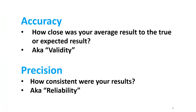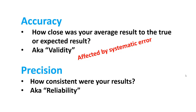To summarize: accuracy is how close your average result is to the true or expected result, also called validity, and accuracy is affected by systematic error — something that affects all trials the same way. Precision is how consistent your results were, also called reliability, and precision is affected by random error — something that affects each experiment in a slightly different way. I hope that helps.